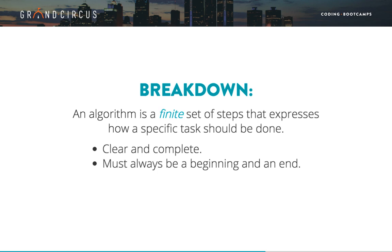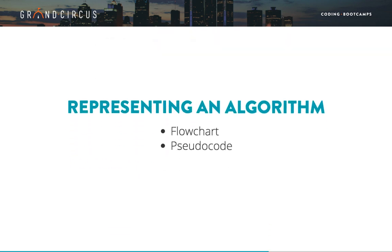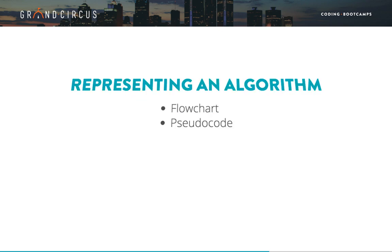For an example of an algorithm, we will look at the task of finding the largest of five positive numbers entered by a user. We will look at two ways to represent this algorithm: first with a flowchart, and then with pseudocode.